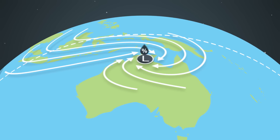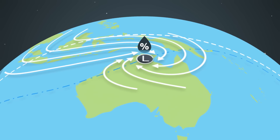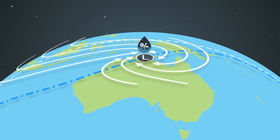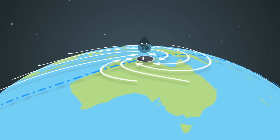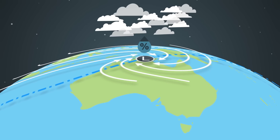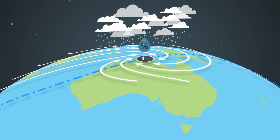As the humidity progressively builds, a monsoon trough — which is the focus for the rainfall and cloudiness — becomes established over the Australian region.